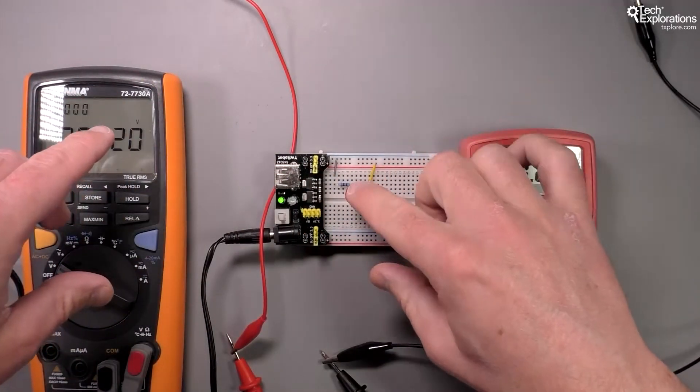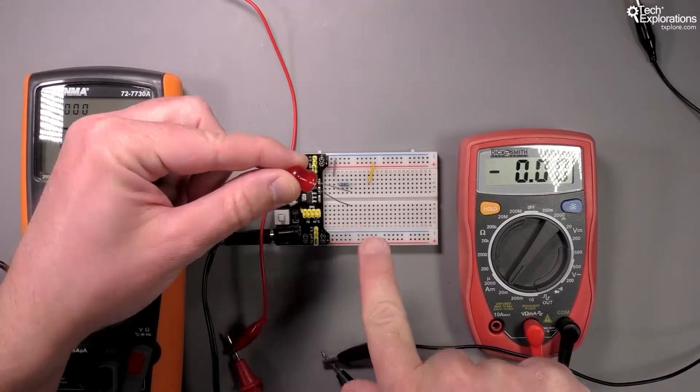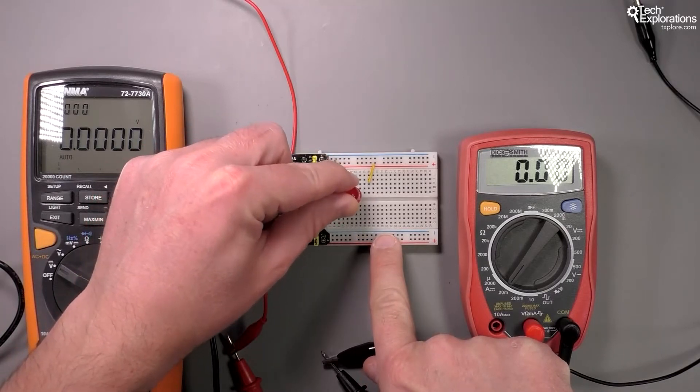I'm going to move my LED so that the longer pin, the anode, is connected to a different column.